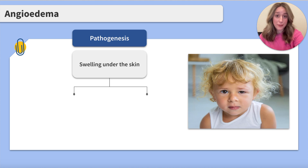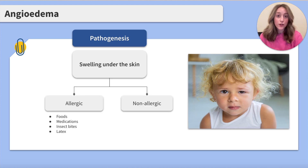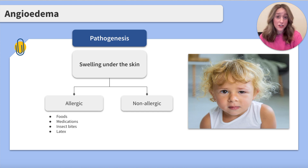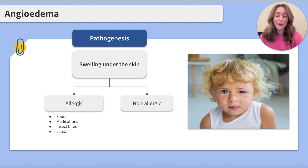There are two types of angioedema: allergic and non-allergic. Allergic angioedema is exactly what it sounds like — it's triggered by an allergic reaction. This is usually caused by a reaction to food such as nuts or shellfish, medications like penicillin or aspirin, or insect bites or latex. Allergic angioedema is typically seen alongside other allergic symptoms such as itching, hives, or difficulty breathing.